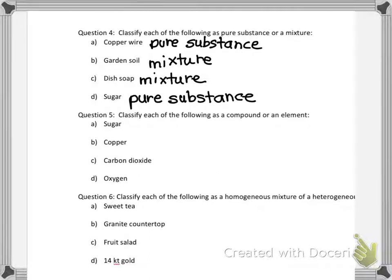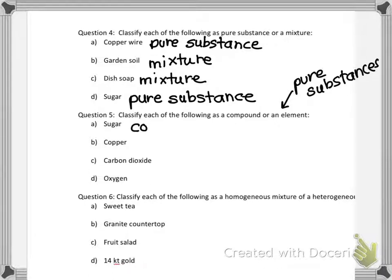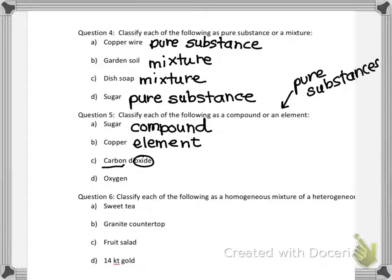Question five: take the pure substances and classify them as compounds or elements. Elements contain only one kind of atom; compounds contain two or more atoms bonded together but only one type of substance. Sugar is a pure substance but it's a compound — sugars have carbons, hydrogens, and oxygens. Copper is an element found on the periodic table. Carbon dioxide has carbon and oxygen (two different elements), so it's a compound.